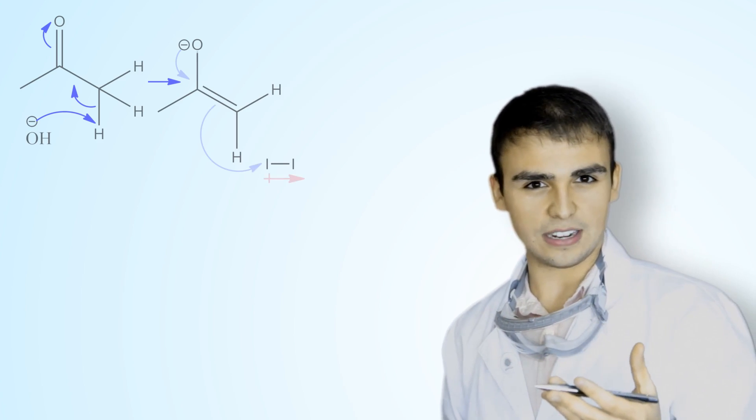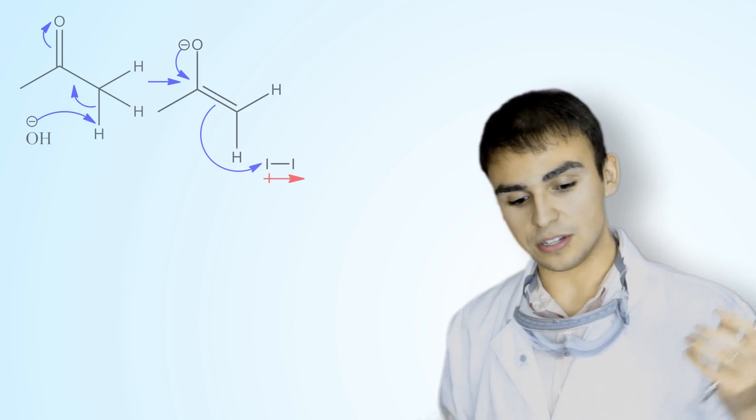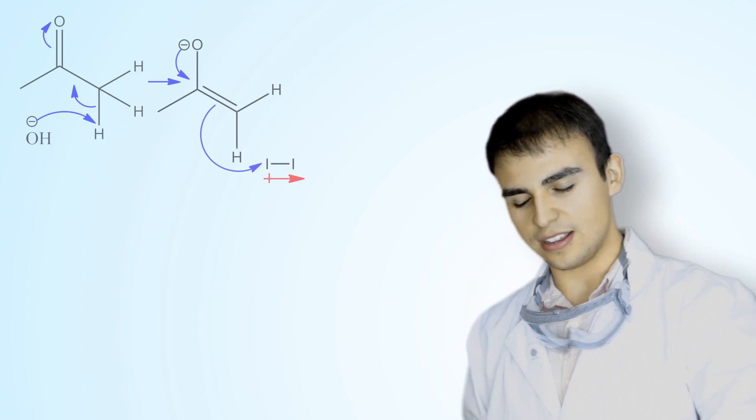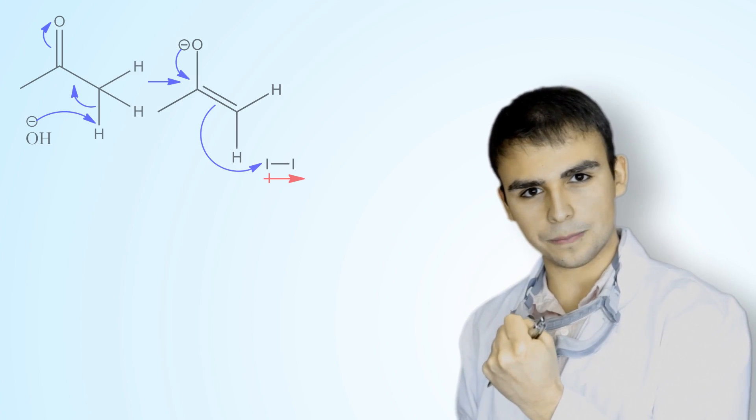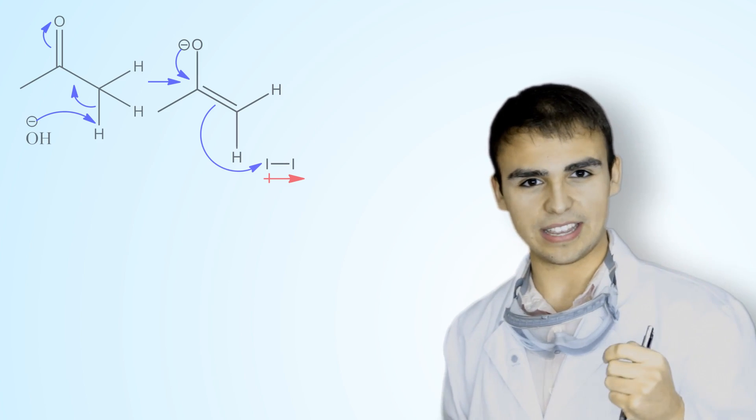the other one a partially negative charge. So our nucleophile is going to move the electron density down and attack that partially positive halogen molecule, kicking off the other one as iodide in our case.